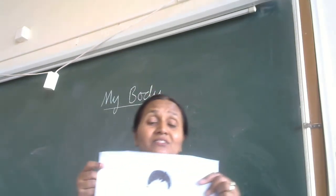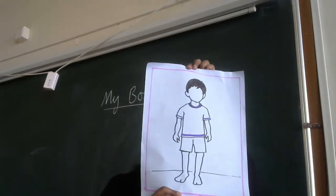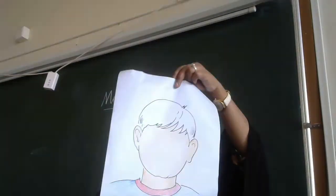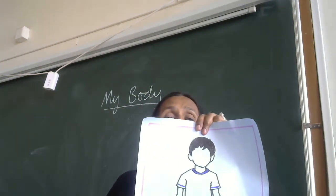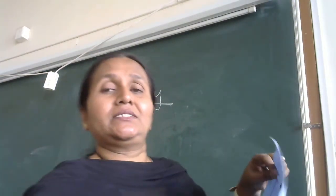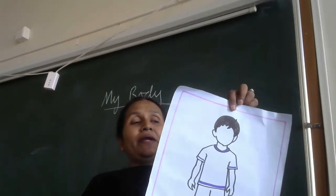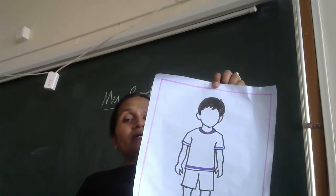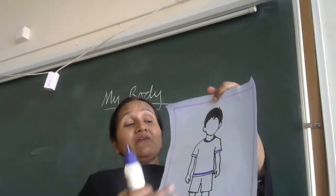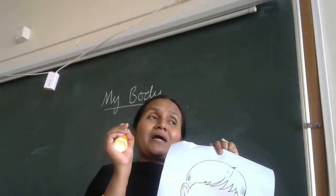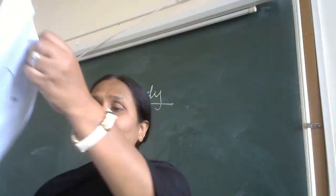Before ending this introduction and recapitulation, in your next class just be ready with a small chart where you do the outline of a boy or a girl — a human body outline with a face. We will complete the body parts and sense organs by cutting and pasting. Do it in the next class. Just keep it ready. Okay, bye-bye. Thank you. Bye-bye.